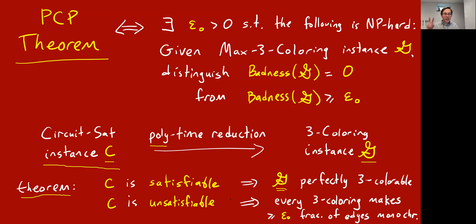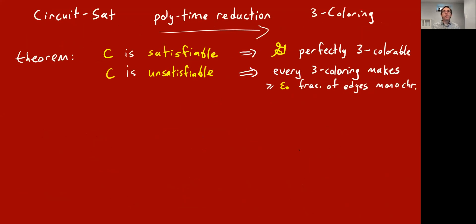This is in contrast to the classic NP-hardness result for three-coloring, as normally understood, which would look exactly the same, except that this would just say the graph is not three-colorable. But here it's saying, as long as it's not three-colorable, it's very not three-colorable. Any three-coloring violates at least epsilon zero fraction of the three-coloring constraints. Therefore, if you could tell the difference between these two kinds of graphs, you could solve circuit sat and P would equal NP.